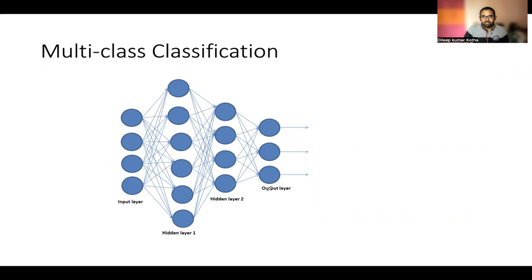This is how we represent the multiclass classification neural network. This is one of the examples I have taken and it has four input layers. It means it has four input features and between we have hidden layers and an output layer.